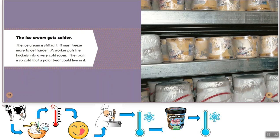Then our ice cream gets colder. The ice cream is still soft. It must freeze more to get harder. A worker puts the buckets into a very cold room. The room is so cold that a polar bear could live in it.